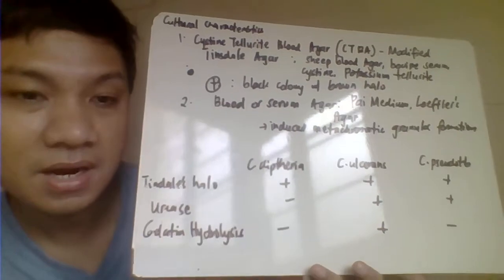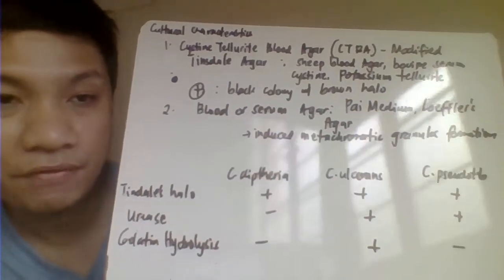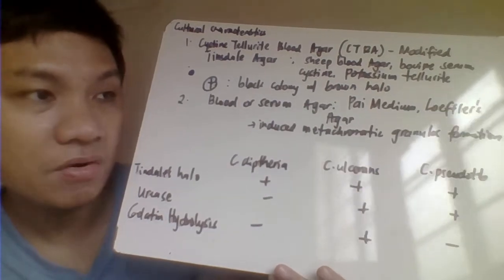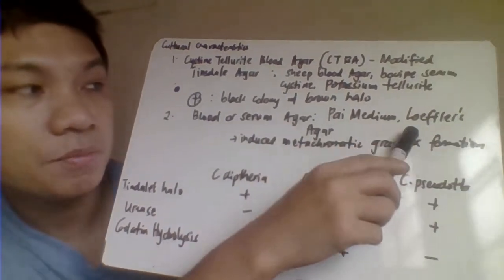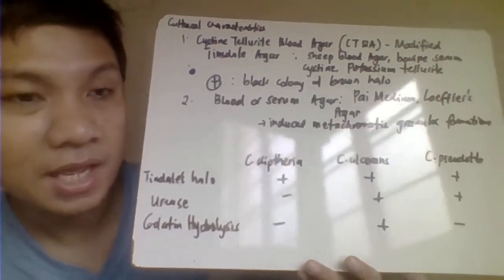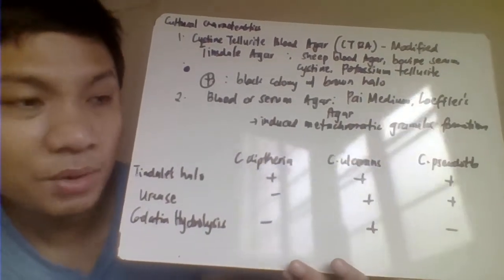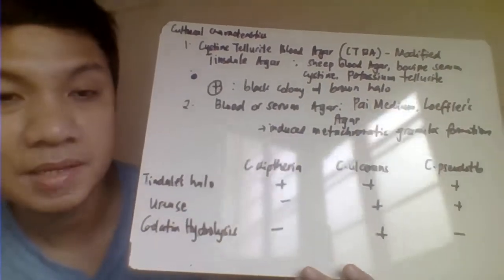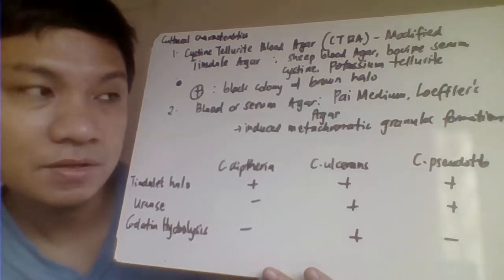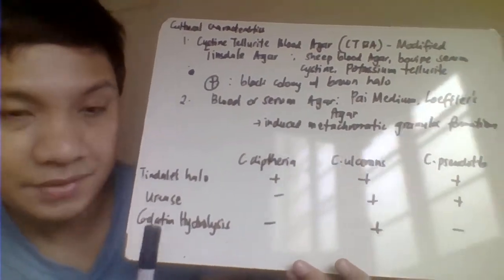Another culture medium is the PI medium or Löffler's agar, which contains blood or serum. This medium is also responsible for inducing the formation of metachromatic granules.